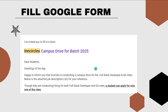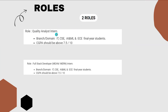Before appearing for the InCircles on-campus placement drive, you have to fill the Google form and be very particular while filling it, because you have to choose only one role: Full Stack Developer or QA. Full Stack Developer is for 10 LPA (10 lakhs per annum) and QA role is for 6 lakhs per annum. QA is a testing role and developer means you will be building/developing things.